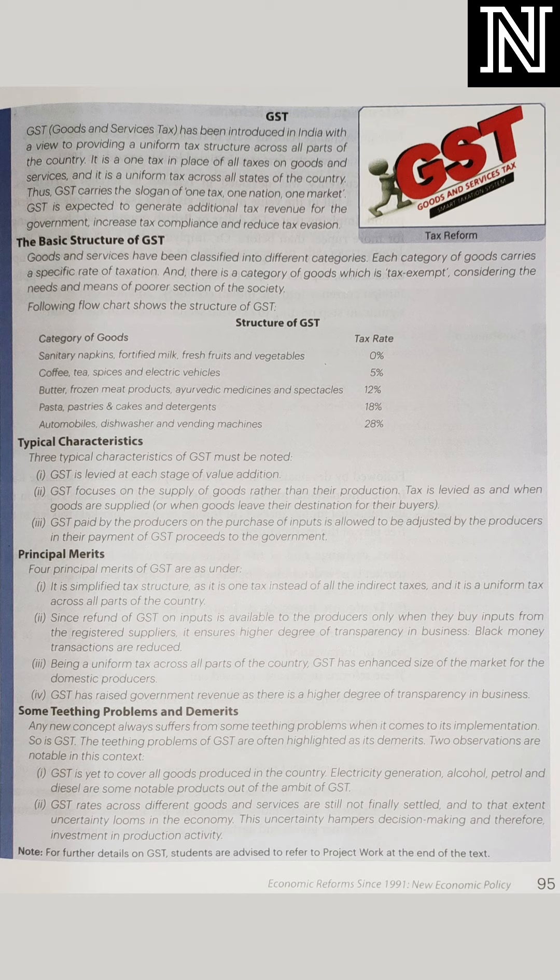GST में कुछ चीजों पर अलग-अलग categories पर GST के rate अलग-अलग हैं. कुछ goods हैं जिन पर बिल्कुल exempted है — GST लगता ही नहीं है — वो हैं sanitary napkins, fortified milk, fresh fruits and vegetables. Coffee, tea, spices and electric vehicles — इन पर 5% लगता है. Butter, frozen meat products, ayurvedic medicine — इन पर 12% लगता है. Pasta, pastries, cakes and detergents — इन में 18% लगता है. Automobiles, dishwasher, vending machine — इन पर 28% लगता है.